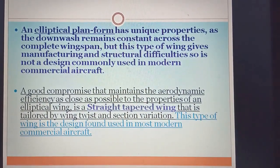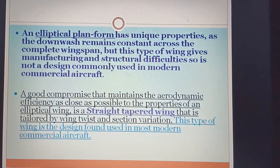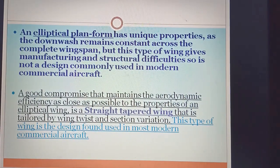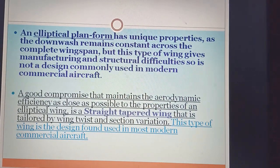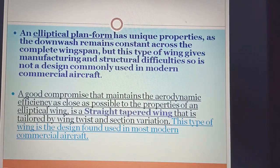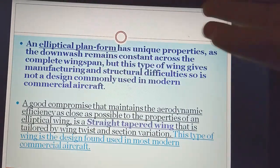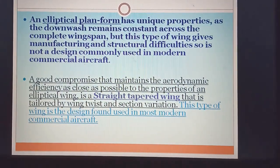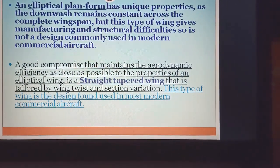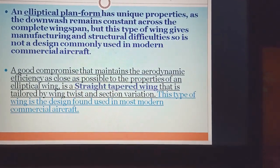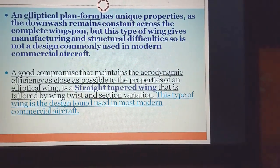A good compromise that maintains aerodynamic efficiency as close as possible to the properties of an elliptical wing is a straight tapered wing. This is important to remember. Instead of rectangular or elliptical, we use a straight tapered wing — tailored by wing twist and section variation. This type of wing is the design found in most modern commercial aircraft.